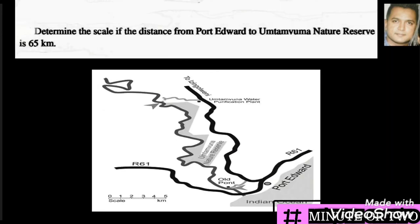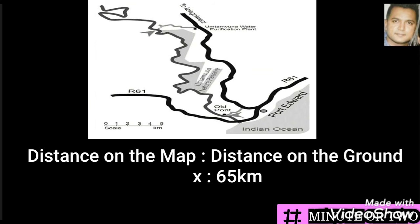Determine the scale if the distance from Port Edward to the nature reserve is 65 kilometers. In determining a scale we must always have the format of 1 is to whatever the amount is. And the second thing is that our units must all be the same.